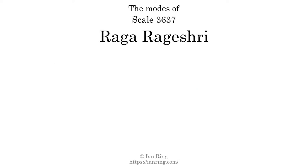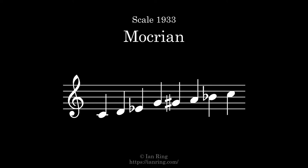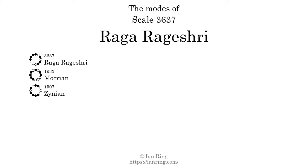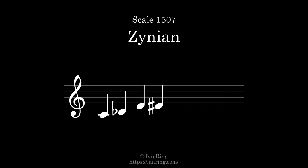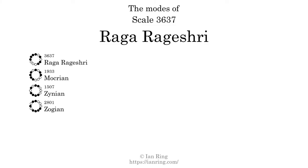This scale has 7 modes. The first mode is itself. The second mode is scale 1933, also known as Mokrian. The third mode is scale 1507, also known as Zynion. The fourth mode is scale 2801, also known as Zynion.